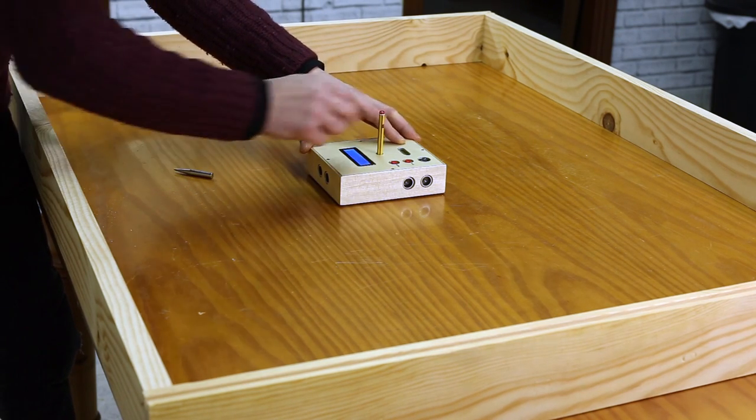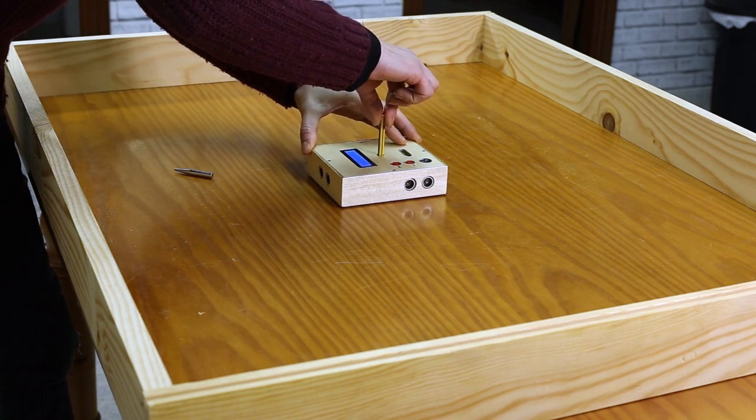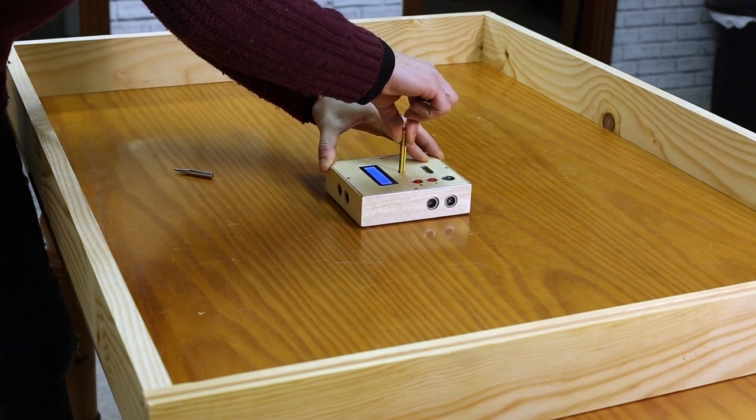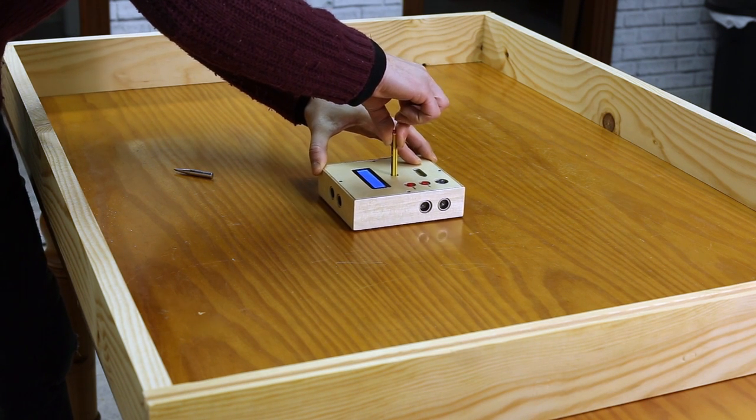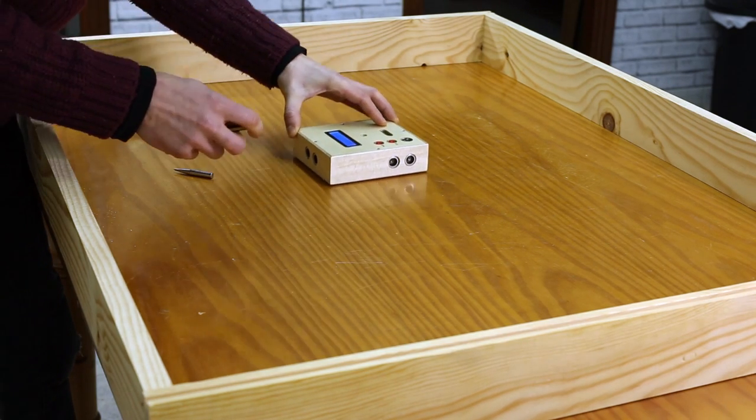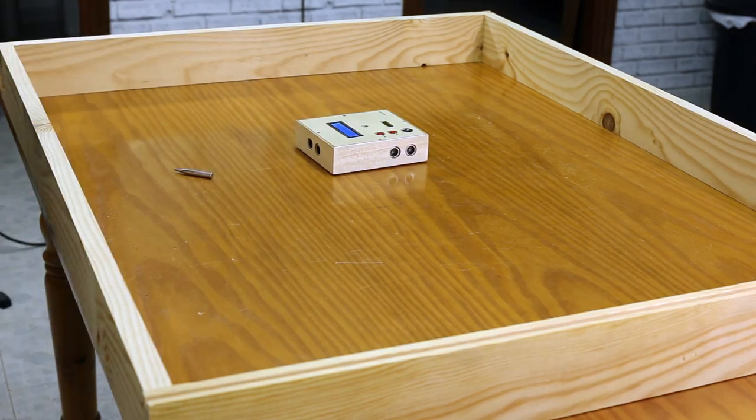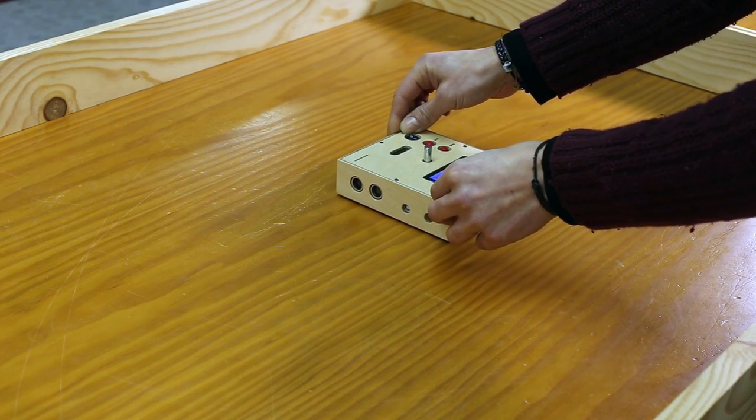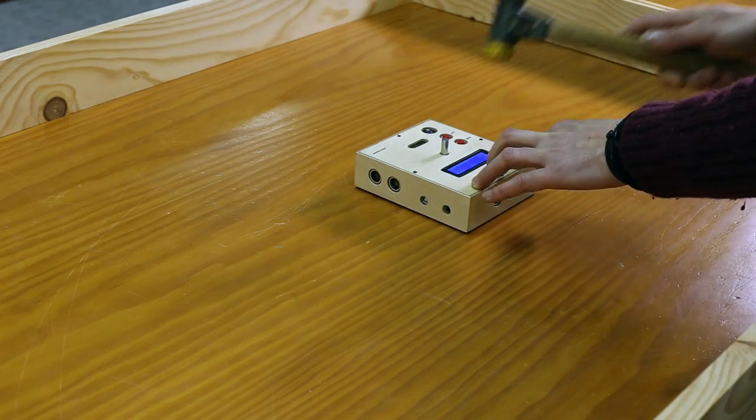When you choose the second program all the measurements reset to zero, and it will start measuring from that point. In this case I'm making a mark 10 cm away from the first one.